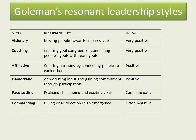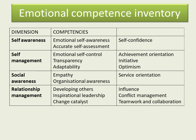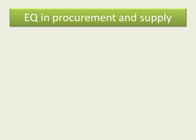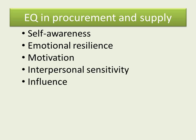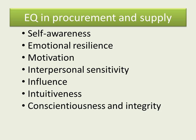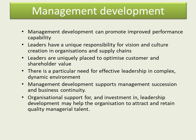Goleman came up with various leadership styles from visionary right through to commanding, though it's not necessary to learn these as we've covered enough theories already. A broader list of EQ competencies important in procurement management includes self-awareness, resilience, motivation, sensitivity, interpersonal influence, intuitiveness, conscientiousness, and integrity.